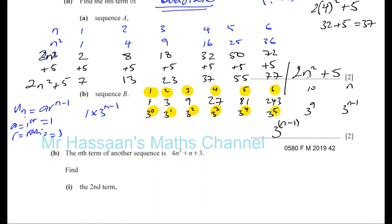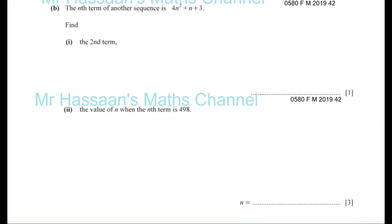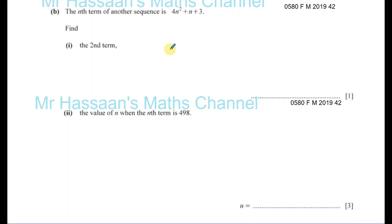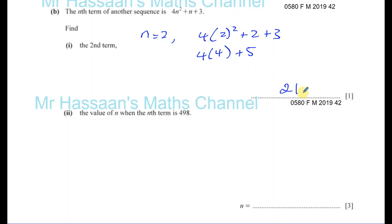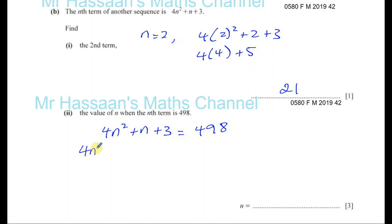Now part B: the nth term of another sequence is 4n squared plus n plus 3. Find the second term — that's when n equals 2. So you have 4 times 2 squared plus 2 plus 3. That's 4 times 4 plus 5, which is 16 plus 5, which is 21. And find the value of n when the nth term is 498. So you have 4n squared plus n plus 3 equals 498.